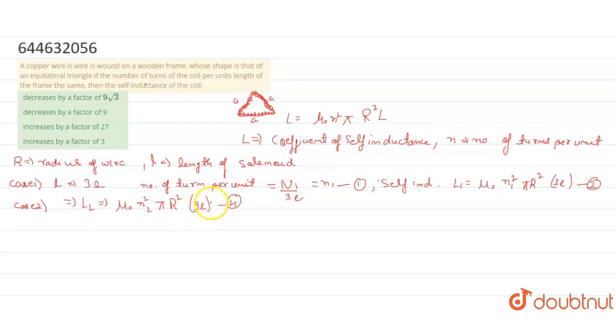According to the question, the number of turns per unit length remain constant, which means we can say that n1 equals to n2, because it is given that the number of turns of the coil per unit length of frame are same.